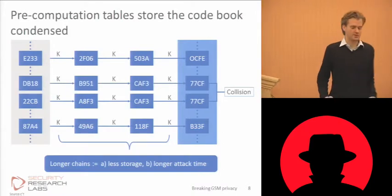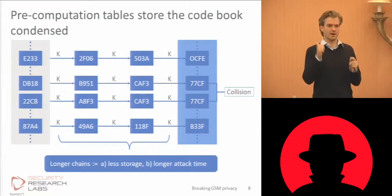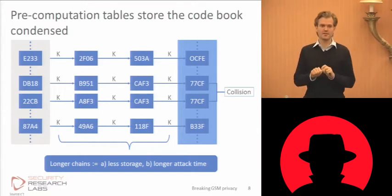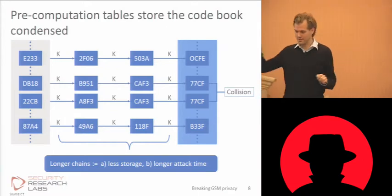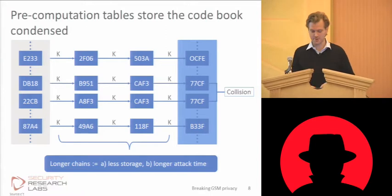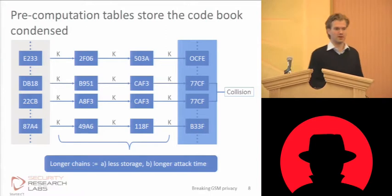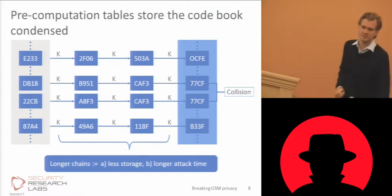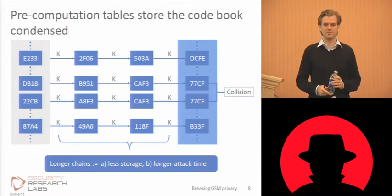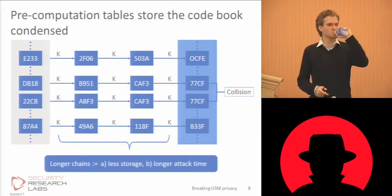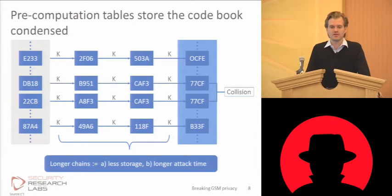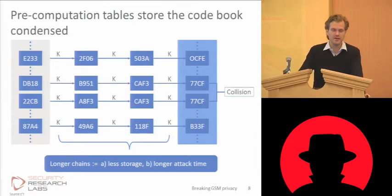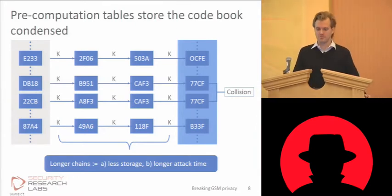That's how we make sure we can compute it in feasible time — by parallelizing the computation and by computing much less than from the outside appears necessary. So we can compute it on four computers in one month. Now this slide starts getting into how we can store it smaller. Even 2 to the 61 values written out is still something like 20 petabytes, still not very feasible. The key here is time-memory trade-offs — a way to store a codebook compressed.